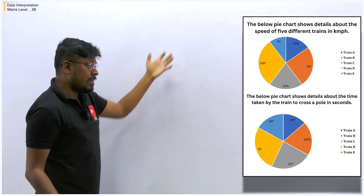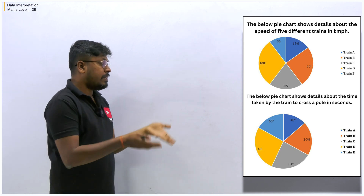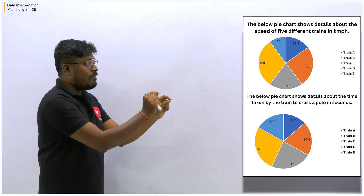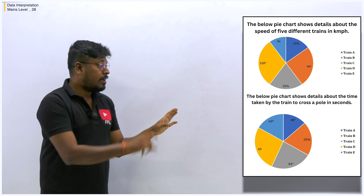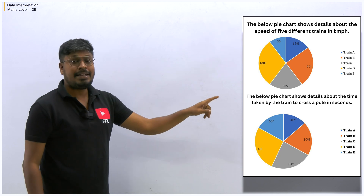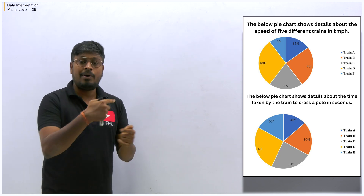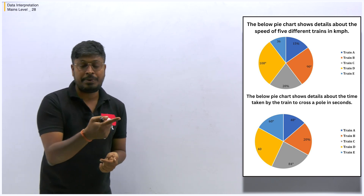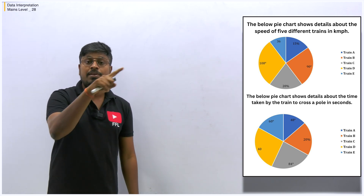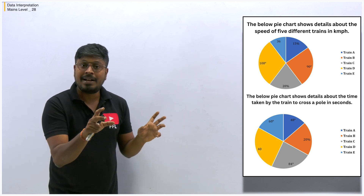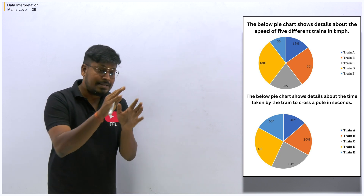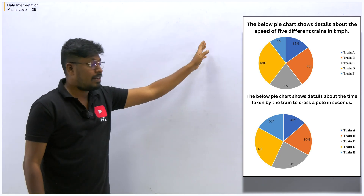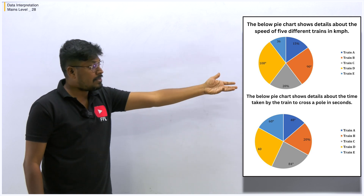Now let me solve this question. They haven't given any notes — just chart values. When you look at the chart carefully, some values are in direct numbers, some are in percentages, and some are in degrees. As I told you in videos 25, 26, and 27, if some values are in percentage and some in degree, you need to convert all values into one format — either all to degrees or all to percentages.